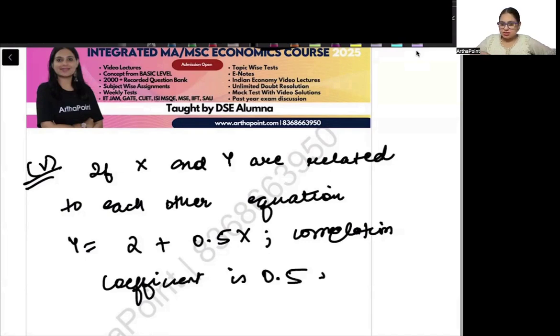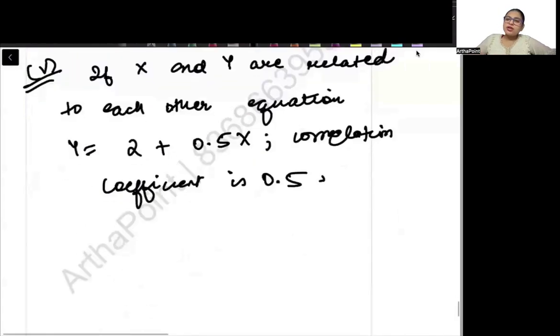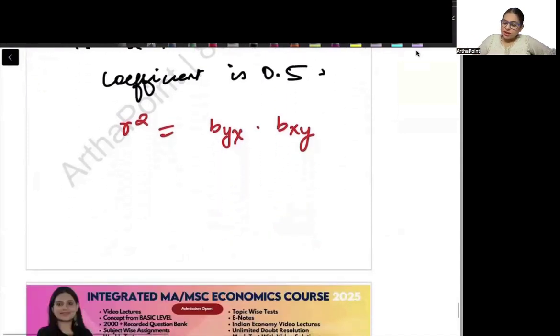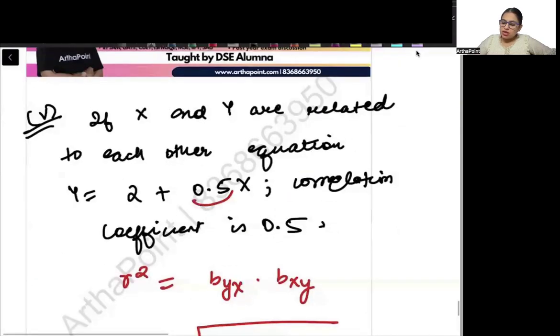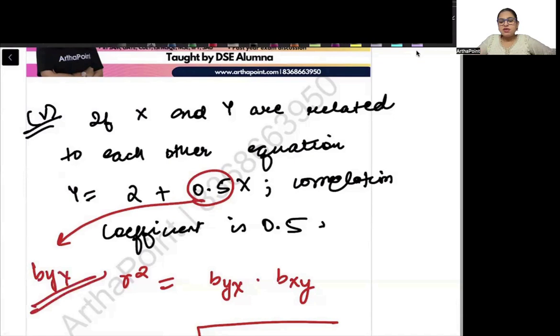This is again an incorrect statement. So we know that correlation coefficient, even if I were to find r square, r square can be given as byx into bxy. So when I talk about r, r will be under root of byx into bxy.